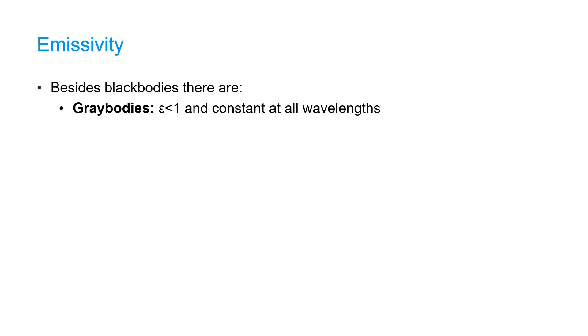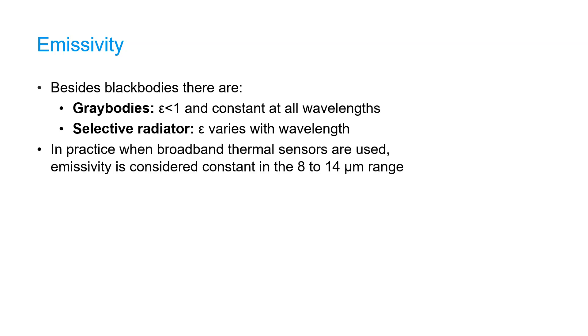Besides black bodies, we can define gray bodies, which have an emissivity less than 1 and is constant at all wavelengths. We can also define selective radiators, that have an emissivity that varies with its wavelength. To be practical with remote sensing, when we use broadband thermal sensors, we consider the emissivity to be constant for the objects in the 8 to 14 micrometer range that is used by thermal sensors.